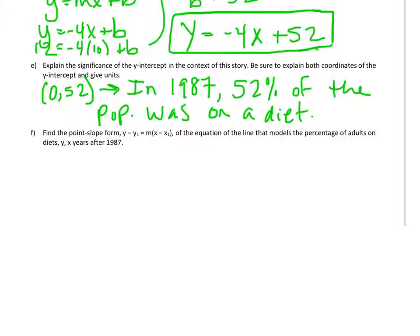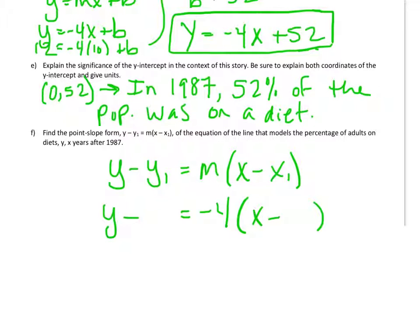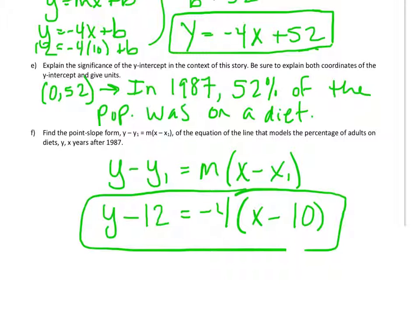So I just start copying this down. y minus y1 is m times x minus x1. Replace the m with a negative 4. And then I have to replace x1 and y1 with a point. And I'm going to use 10, 12. So I'm going to replace x1 with the x-coordinate of my point, and y1 with the y-coordinate of my point. So that is called the point slope equation of the line.